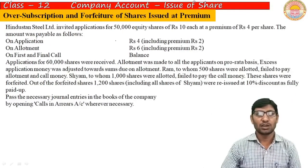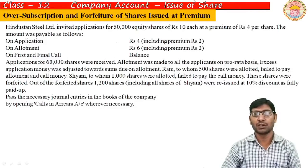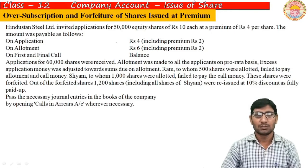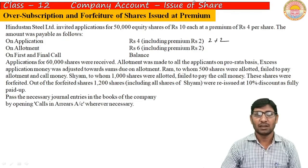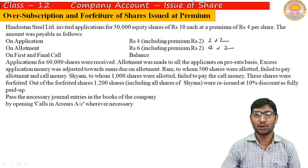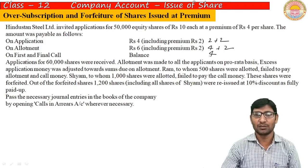Next question: Hindustan Steel Limited invited applications for 50,000 equity shares of Rs. 10 each at a premium of Rs. 4 per share. The amount was payable as follows — on application Rs. 4 including premium (Rs. 2 application money + Rs. 2 premium); on allotment Rs. 6 including premium (Rs. 4 allotment money + Rs. 2 premium); balance Rs. 4 on call.